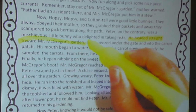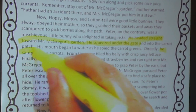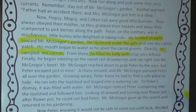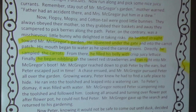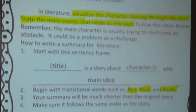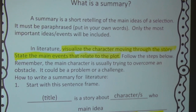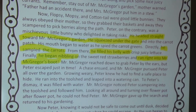He squeezed under the gate and into the carrot patch. His mouth began to water as he spied the carrot greens. He sampled the carrots. From there, he filled his belly with crisp, juicy lettuce. Finally, he began nibbling on the sweet red strawberries and ran right into Mr. McGregor's boot. So as I visualize Peter, I see that he goes into the garden and he begins eating. He's done three things so far: he went into the garden, he began eating, and he also ran into Mr. McGregor.